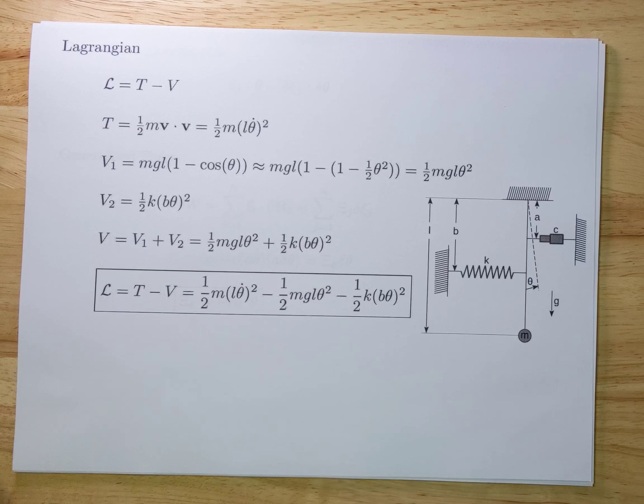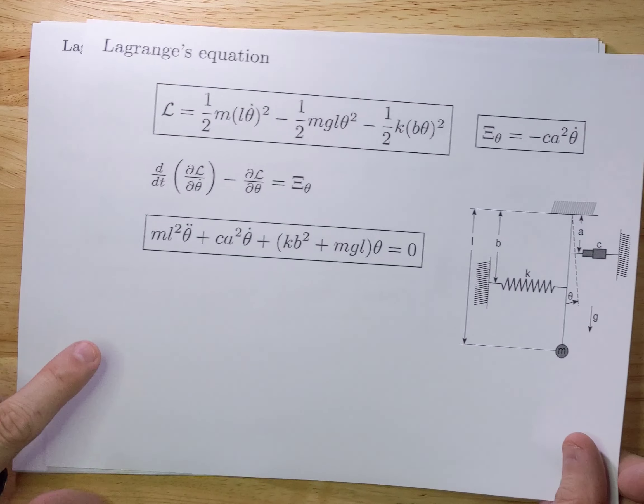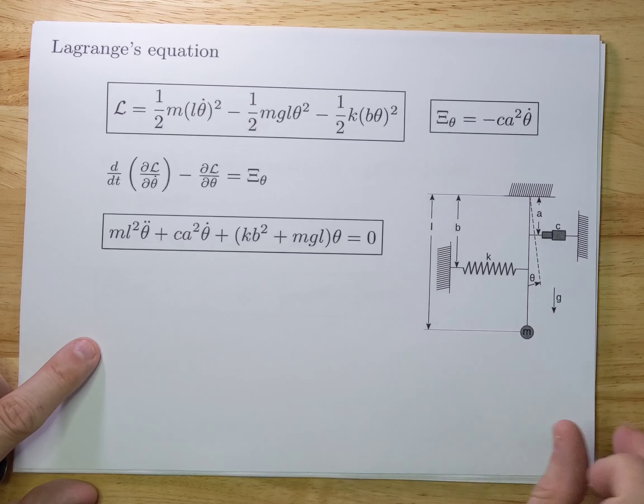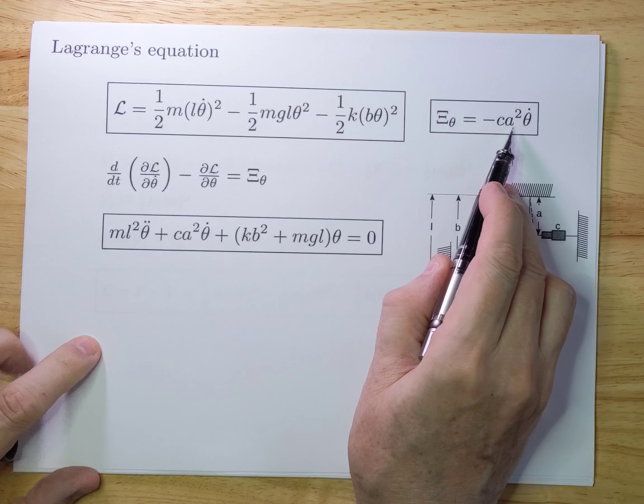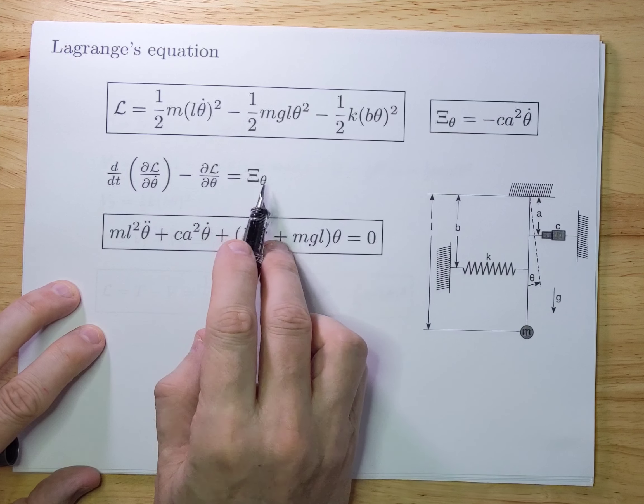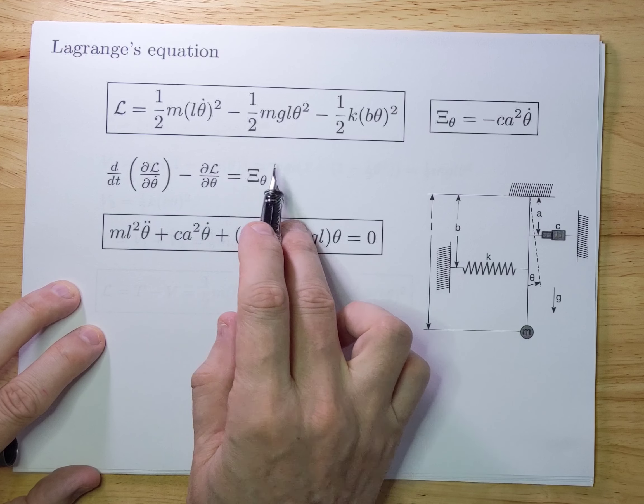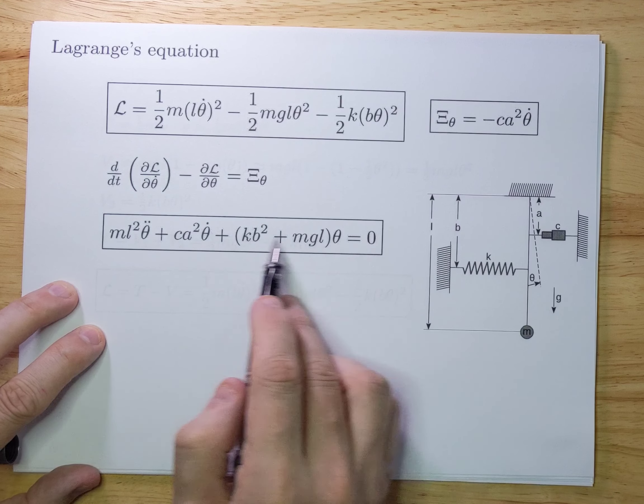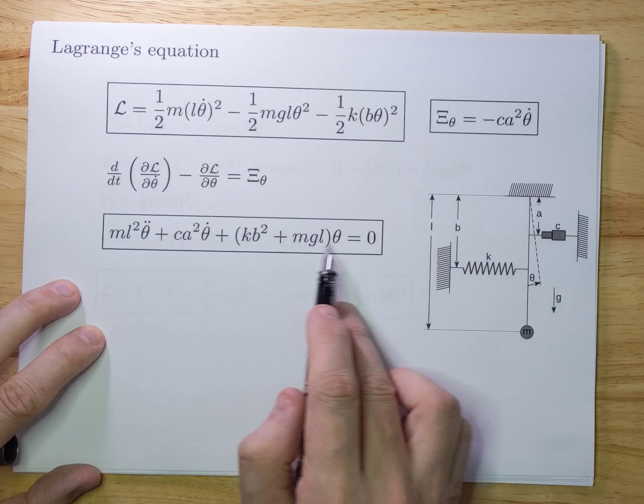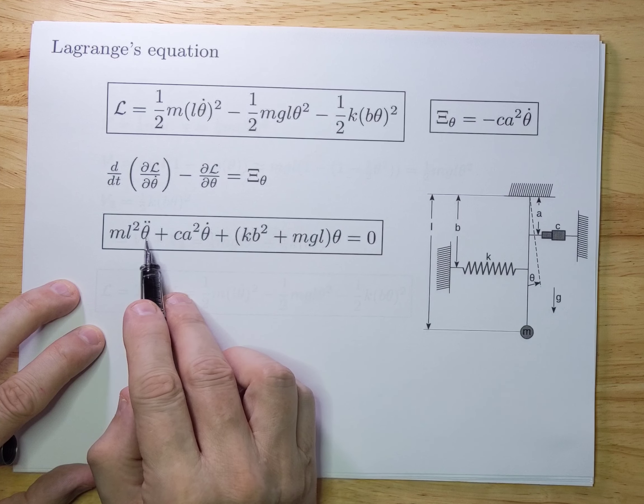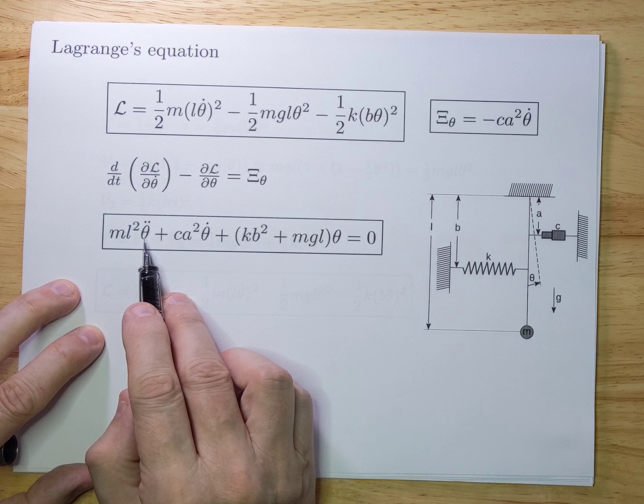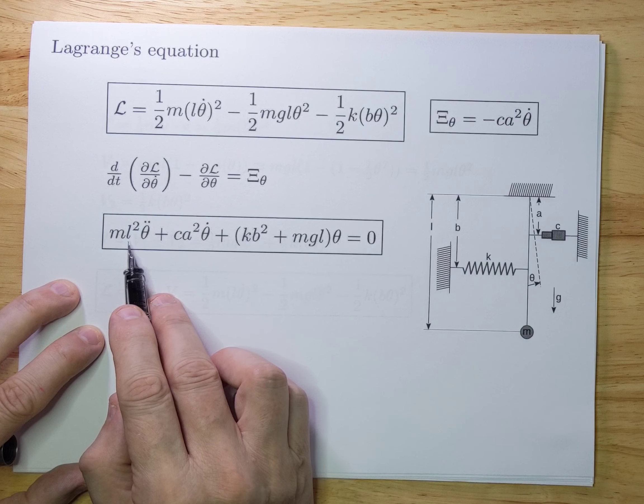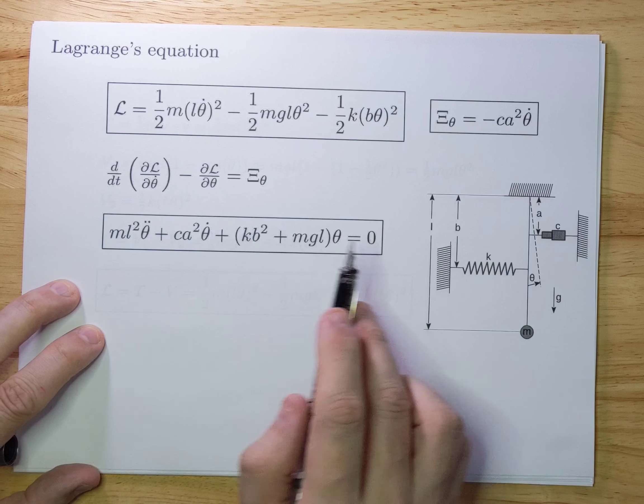So now we have the Lagrangian. And we also have the generalized force, which we calculated before. So now we can fold this into the Lagrange equation, which you see here, to generate the equation of motion. So this is the behavior of theta over time. And that's a linear differential equation of second order, as you can see. It's just filling it out. It's just a little algebra exercise.